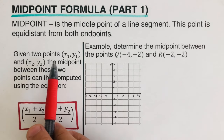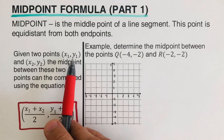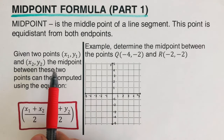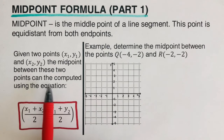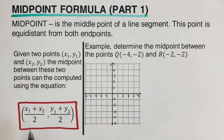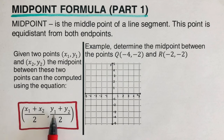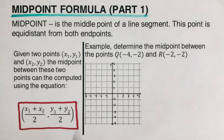We have the midpoint formula here. Given two points (x₁, y₁) and (x₂, y₂) in coordinate form, the midpoint between these two points can be computed using the midpoint formula. It is actually the average of the x-values and the average of the two y-values: x₁ plus x₂ over 2, and y₁ plus y₂ over 2.